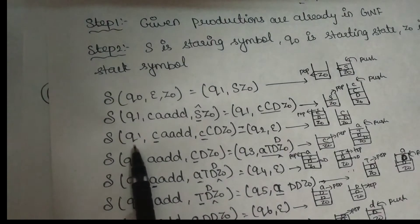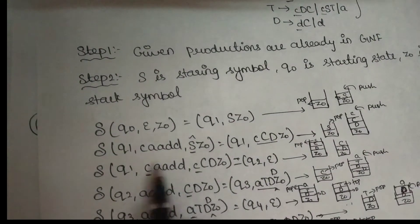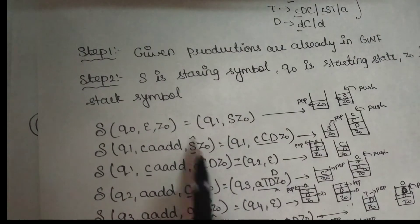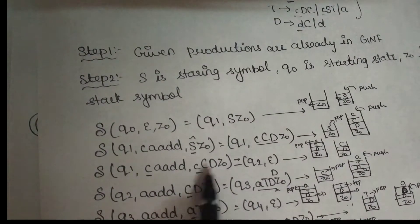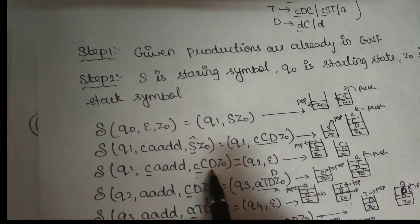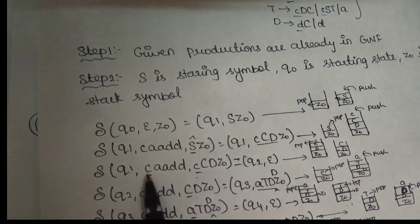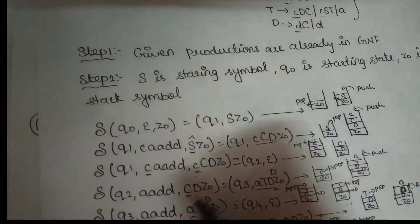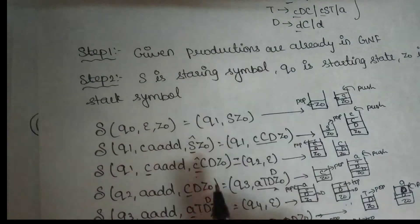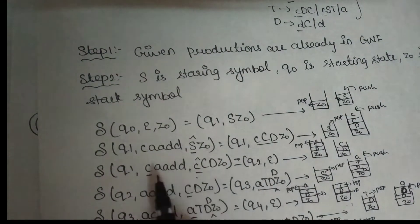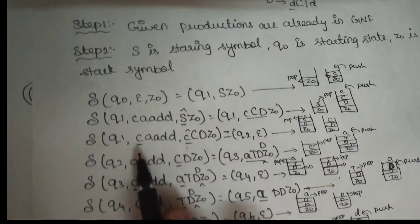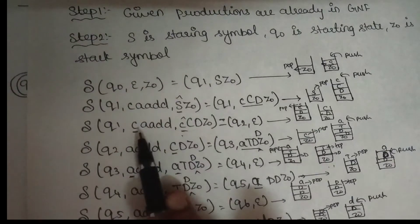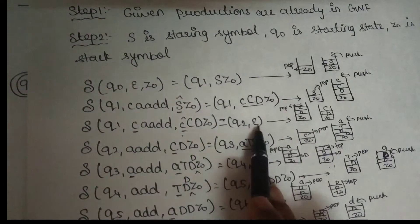In Q1, the input symbol is C and the remaining input strings are C, A, A, D, D. We replace: there is a non-terminal, so we push C, C, D. Now we need to verify the top of the stack — there is a terminal at the top. The input symbol matches the top of the stack, so we pop and change state. The input symbol matches the top of the stack, so pop, pop and change.